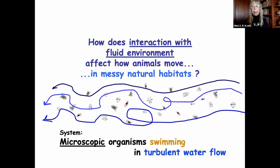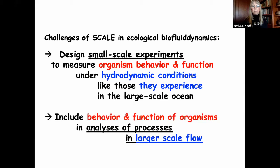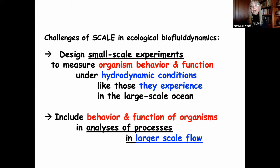The system I want to talk about today is microscopic organisms swimming in turbulent water flow in the ocean. There are some real challenges of scale in ecological biofluid dynamics. One challenge is: how do we design small-scale experiments to measure organism behavior or function, but do it under hydrodynamic conditions like those they actually experience out in the large-scale ocean? The other challenge is how do we include small-scale behavior and function of organisms in our analyses of processes occurring at larger-scale flows.